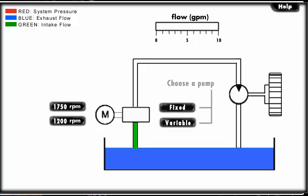Click on the Fixed or Variable button to change the type of pump in the system. Then experiment with varying the gallon per minute discharge and the speed of the flywheel by clicking on the different RPM settings. If you choose the variable pump, you can also vary the output by adjusting the displacement of the pump by moving the handle on the pump.